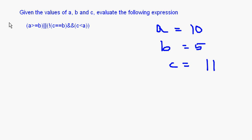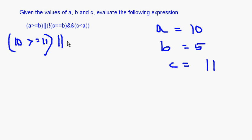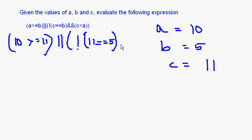Let us substitute the values. a greater than or equal to b is 10 >= 5. Then there is a logical NOT, and the OR operator. After that: c equal to equal to b is 11 == 5. Then we have the AND operator, and then c less than a, which is 11 less than 10.